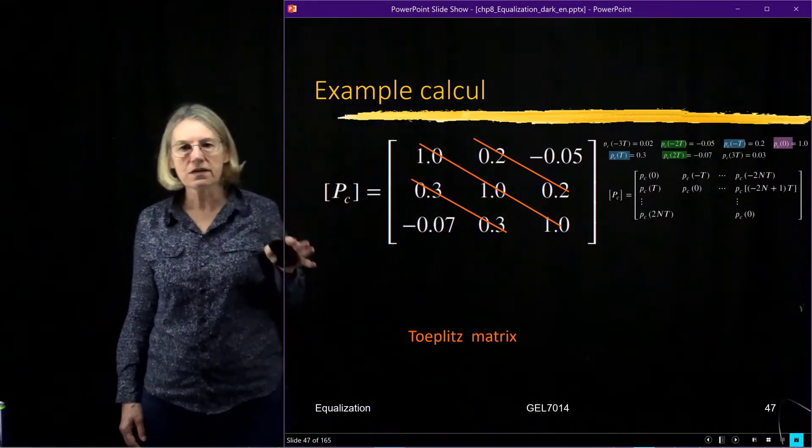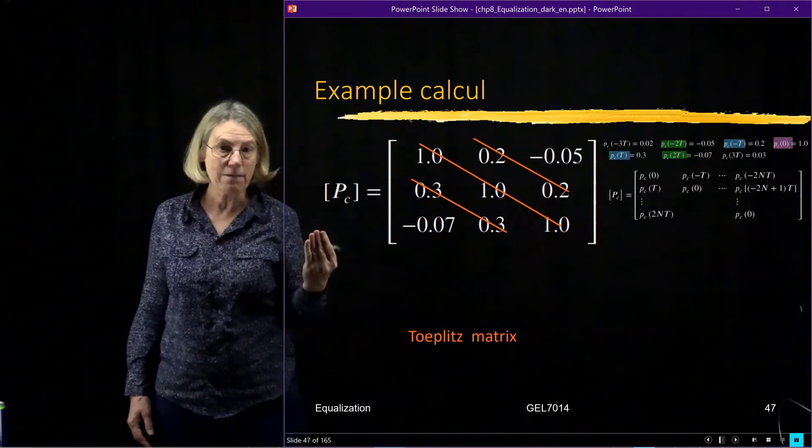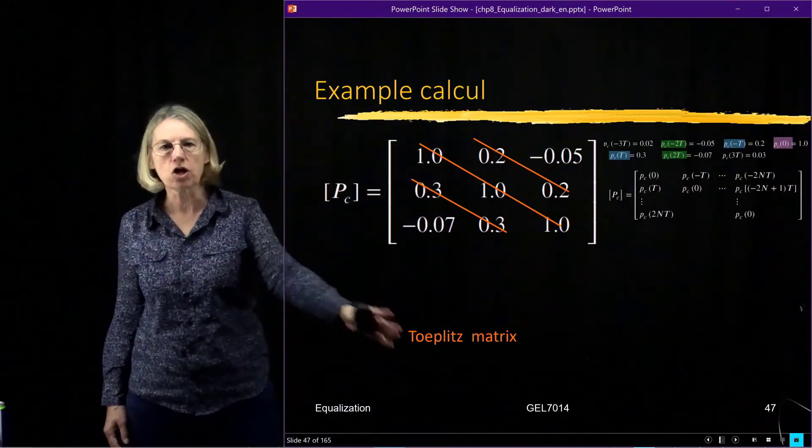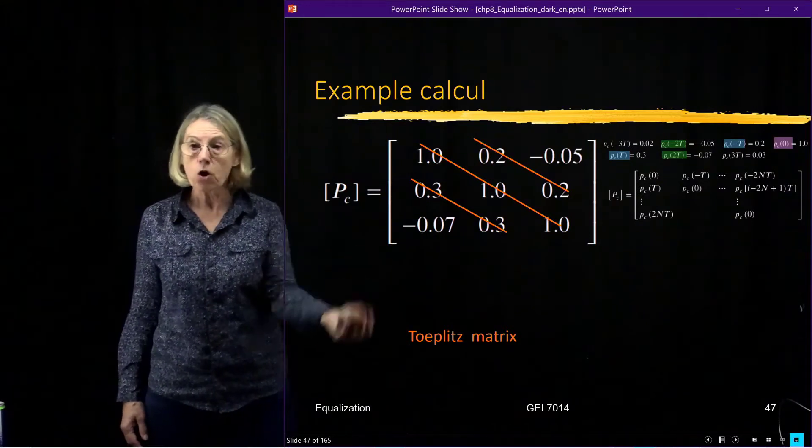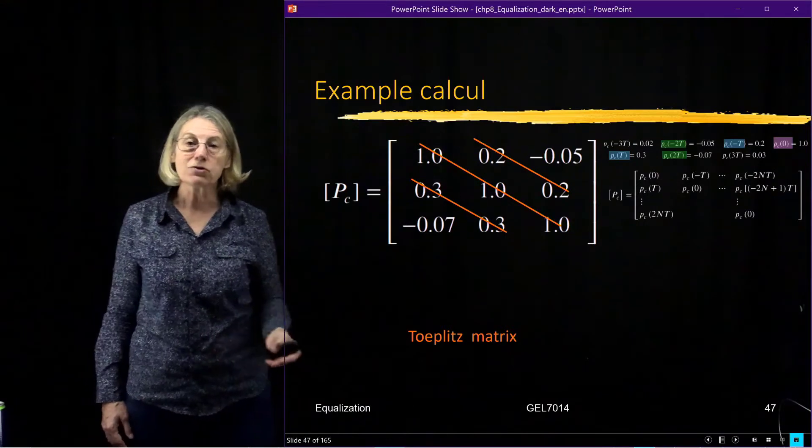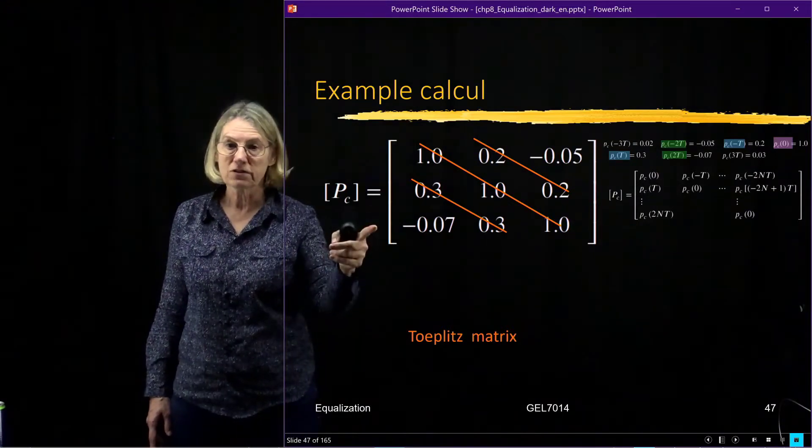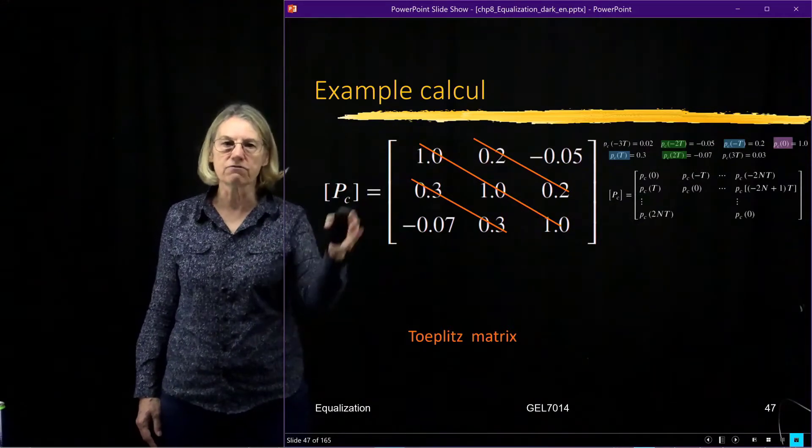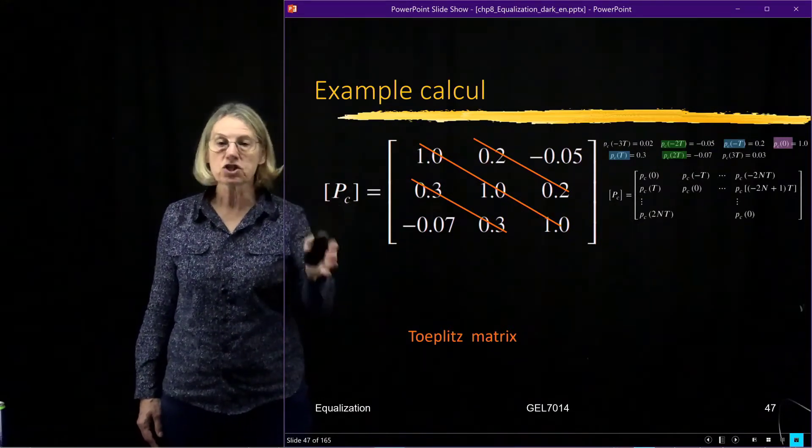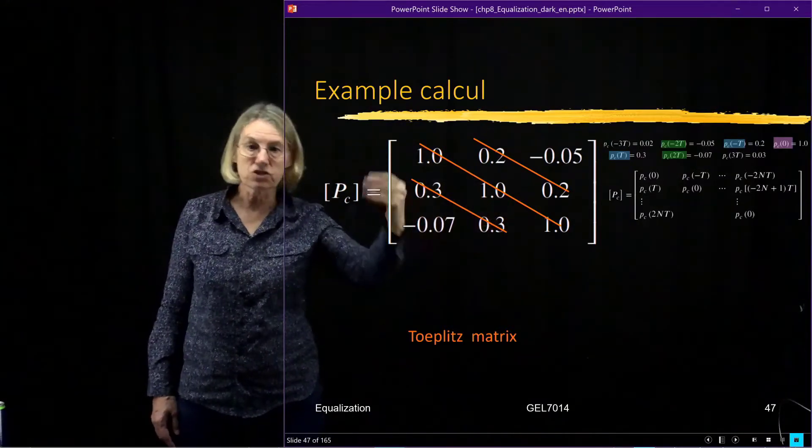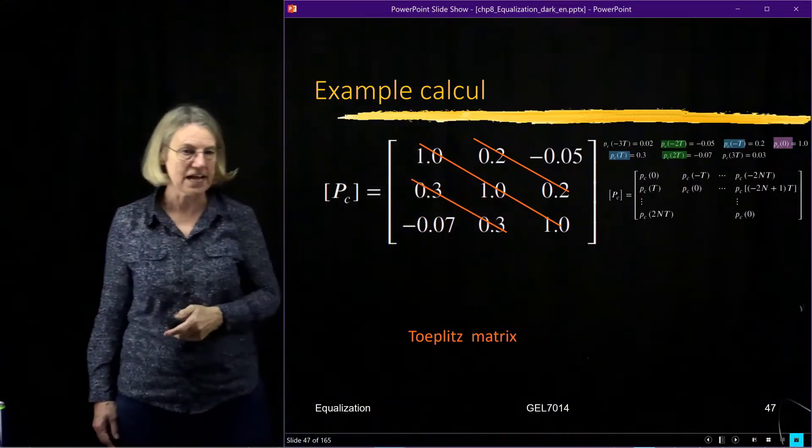Now this form has a name. A matrix that has constants along the diagonals and sub-diagonals is called a Toeplitz matrix. A Toeplitz matrix is interesting because there are all kinds of numerical routines on how to efficiently invert this matrix. So the computational cost of inverting this matrix is much less than it would be if this was an arbitrary matrix without the structure of having constants on the diagonal.